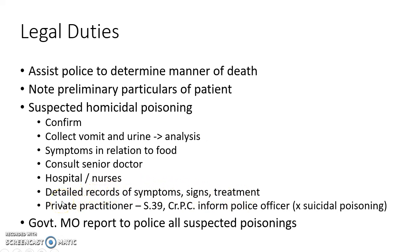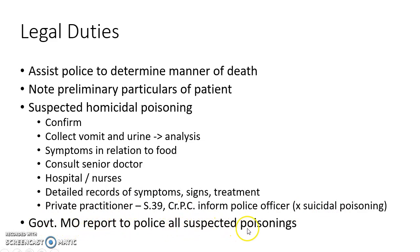If a private practitioner confirms that it is homicidal poisoning, he has to inform the police. This is according to Section 39 of the Code of Criminal Procedure. A private practitioner need not inform the police if he confirms that it is suicidal poisoning. However, a government medical officer should report to police all cases of suspected poisoning, whether suicidal, homicidal, or accidental.